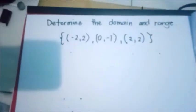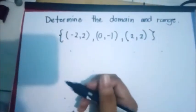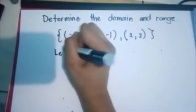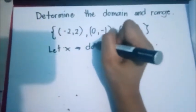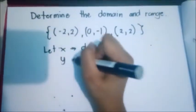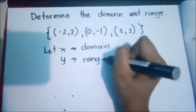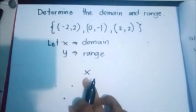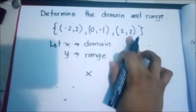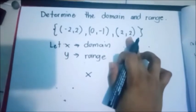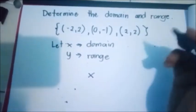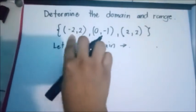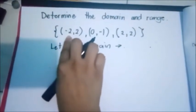So this will be the list of all ordered pairs that we have. Now let us have the domain. Let X be the domain and Y be the range. If X is the domain, our X greatest is 2. So we have the domain — list of domain numbers. All elements in the first term will be the domain.